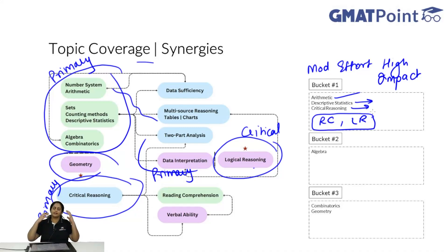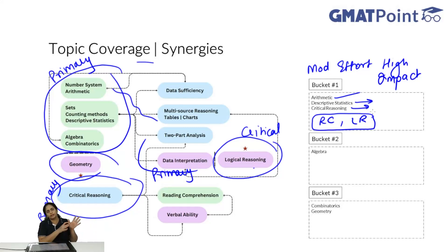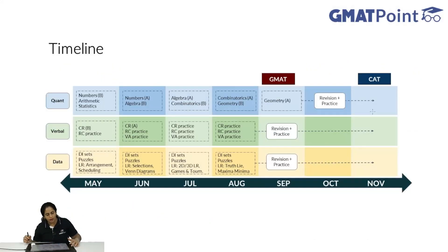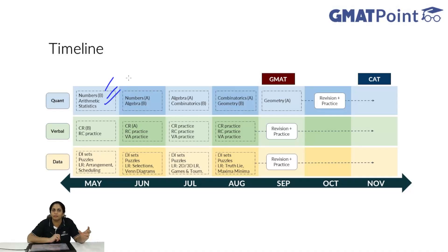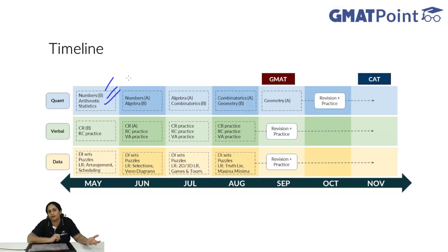This is basically how I would suggest structuring your preparation. The key important thing to remember is: do arithmetic first, do logical reasoning and RC first, do critical reasoning first, do descriptive statistics first — they will help you quite a bit in both exams. Now let us go to a timeline as to when you should do what. Starting with quant, obviously put number systems, arithmetic, and statistics first. For GMAT you need the basics of number systems: what is HCF, LCM, what is divisibility — all of that is enough. The advanced part of number systems you can leave for later as it is more relevant for CAT.